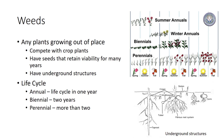Accurately identifying the weed and knowing its life cycle is vital to implementing the proper control measures. Annual weeds germinate, flower, and seed in one year, and they can be further divided based on when they germinate — summer or winter annuals. Bi-annuals live for two years and perennials live for more than two years.